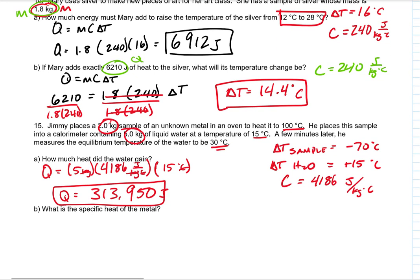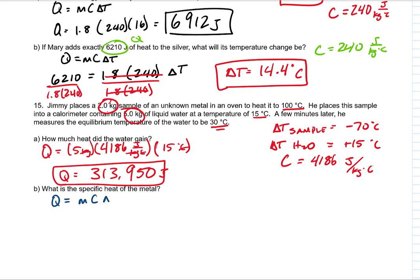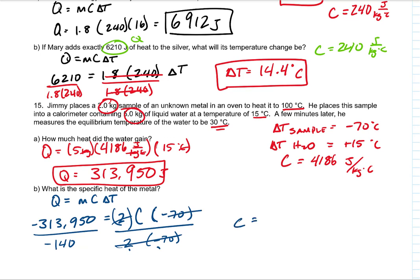What's the specific heat of the metal? We're going to do that same equation for the metal, Q equals MC delta T. We know the Q, 313,950. We know the mass, 2 kilograms. We do not know the specific heat of the metal sample, but we do know that the delta T is negative 70 degrees Celsius. Since the metal is losing energy, that needs to be negative. To find C, we're going to divide by 2 and by negative 70. We're going to divide by negative 140, because that's what you get when you take 2 times 70. And C comes out to be 2,242.5 joules per kilogram degree Celsius.